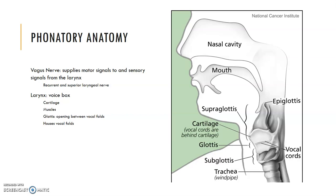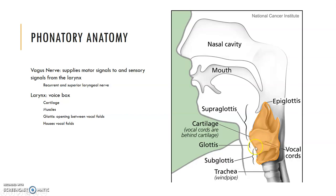The larynx, or voice box, is made up of cartilage, muscles, and mucosa. At the top is the epiglottis — primarily for swallowing, not phonation — because the larynx is primarily designed for airway protection during swallowing. Below that is the thyroid cartilage, and underneath is the cricoid cartilage. The larynx sits on top of the trachea. When talking about different areas: the glottis is the space between the vocal folds; the subglottis is the area below the glottis; and the supraglottis is the area above the glottis.